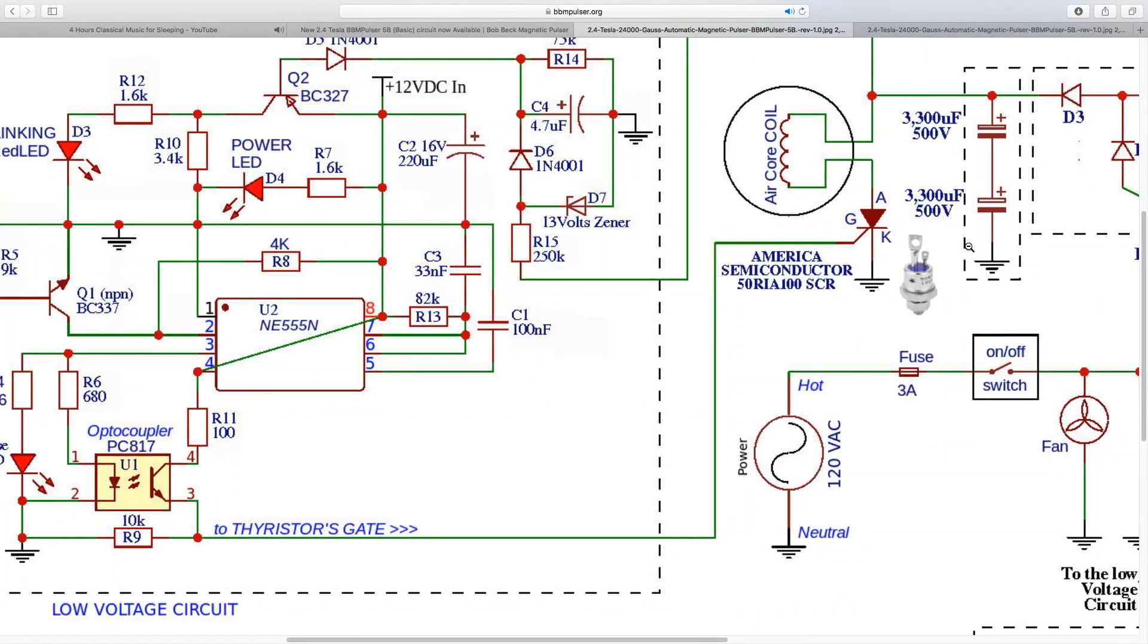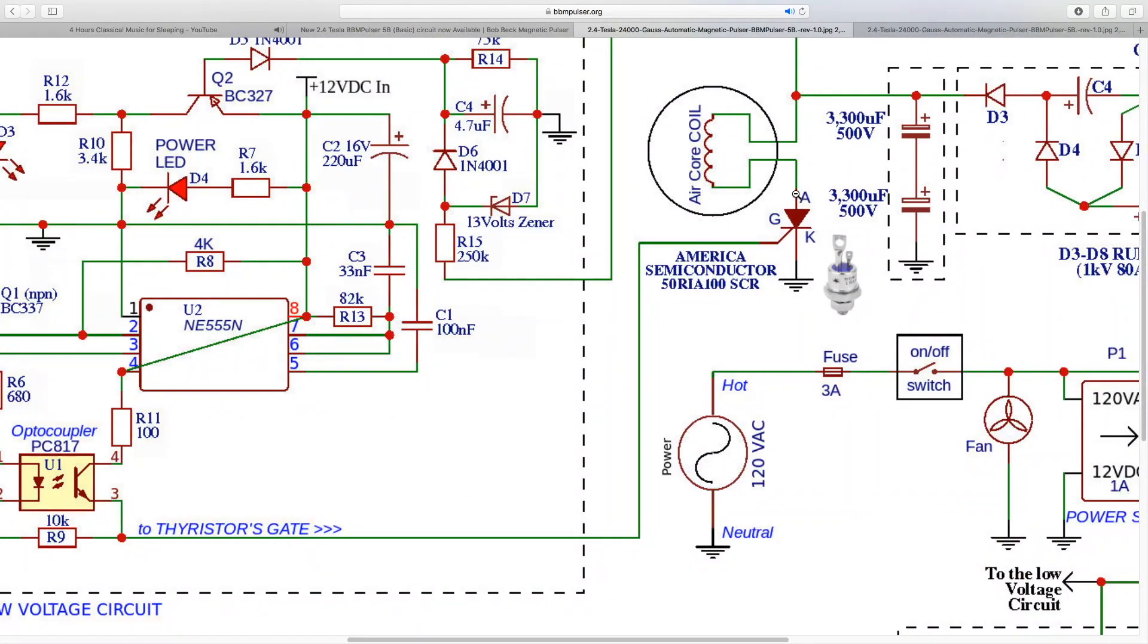Before thyristor triggers, it will have 900 volts on the anode and ground, which is zero on the cathode. Anytime you send voltage into the gate, this will become a short and it will short anode to the cathode. All the energy that's been stored into the capacitors will get discharged into the coil, thus producing magnetic pulse and discharging capacitor bank.